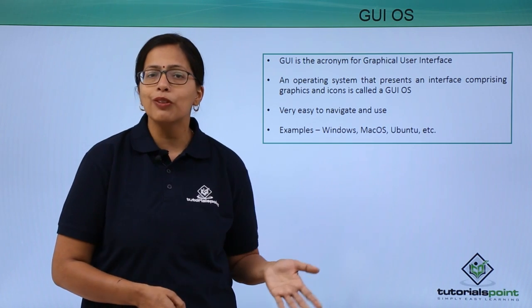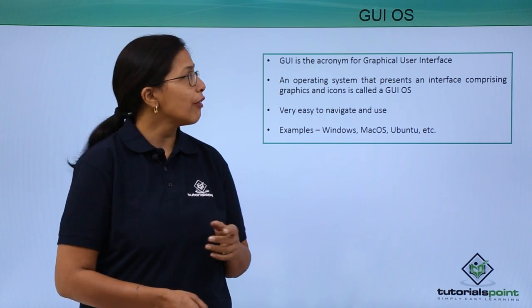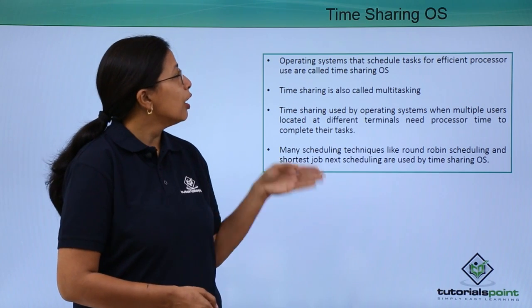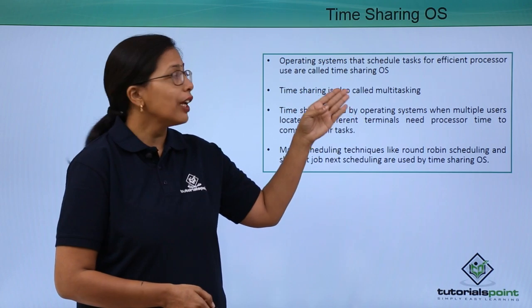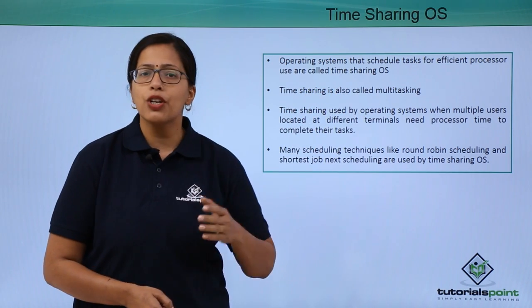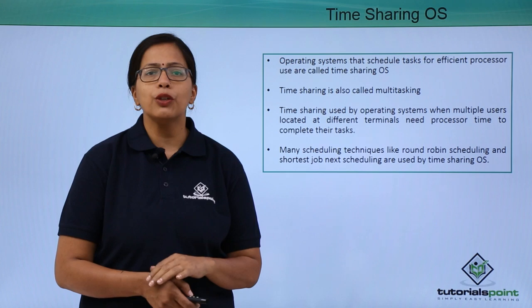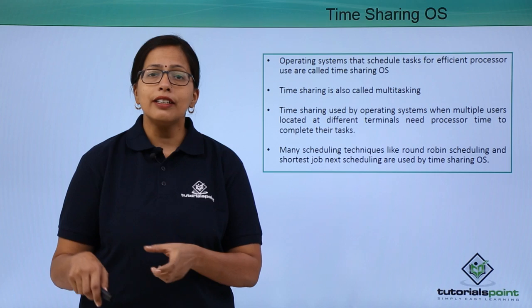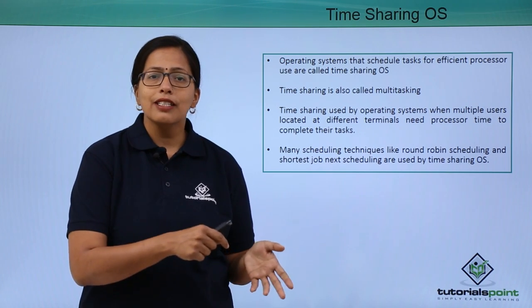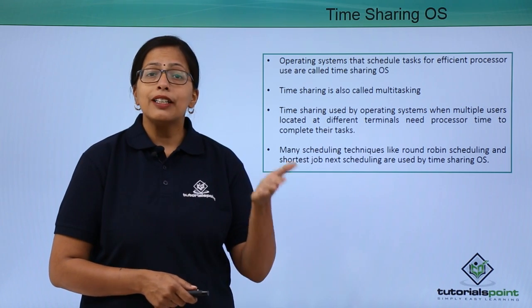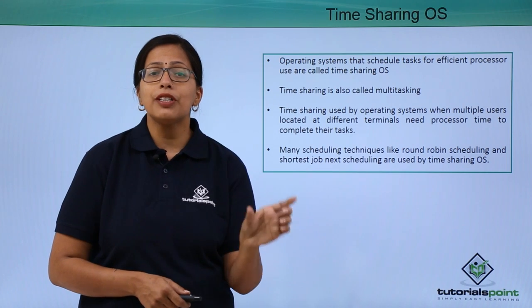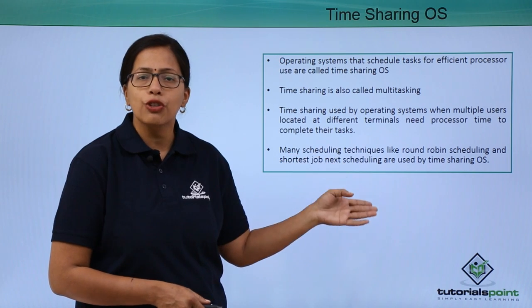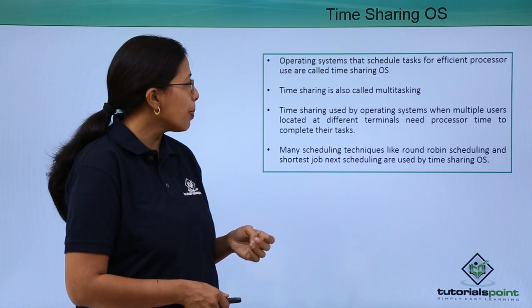GUI operating systems have become very popular because they are very easy to use and navigate. Then comes the time-sharing OS. Operating systems that schedule tasks for efficient processor use are called time-sharing OS. What it does is process multiple tasks at the same time, so multiple tasks are sharing the same time slice in the processor. A specific type of operating system called the time-sharing operating system is required for this.